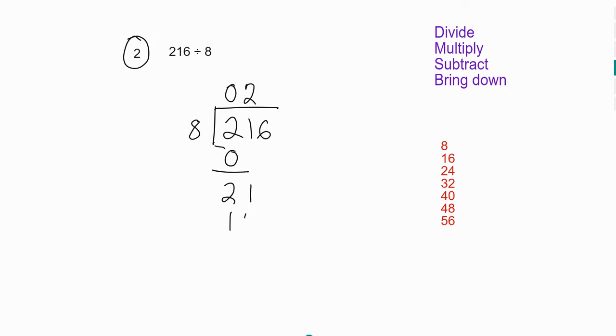Eight times two is 16. Twenty-one minus 16 gives you five. Bring down the next digit, 6, so we have 56 here, which is one, two, three, four, five, six, seven. So seven lots of 8 gives you 56. So 56 minus 56 gives you zero. The answer to 216 divided by 8 is 27.